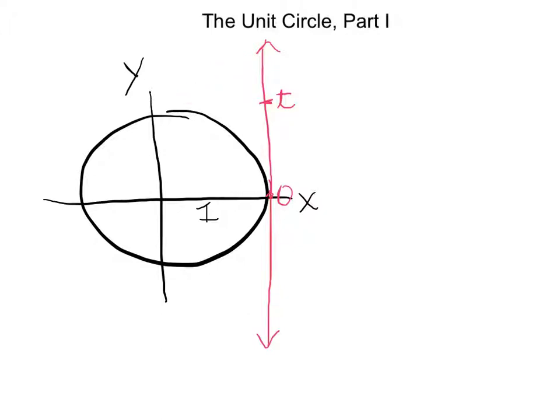When we do that, the point t is going to fall on the circle. Since the circumference of the circle is 2π (because the radius is 1), if t happened to be at the point π/2, it would wrap right to π/2 on the circle.